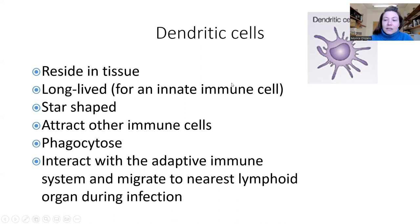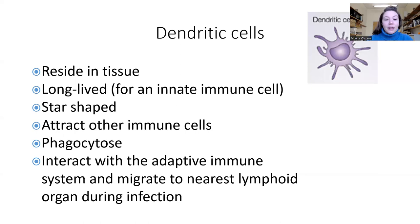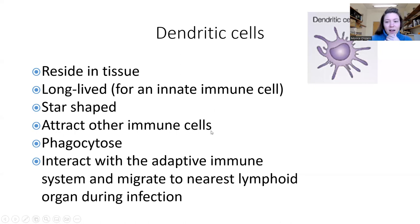Why would your body bother having both dendritic cells and macrophages? It's probably that we need a backup system, and they live in different locations. Macrophages have that pool of monocytes in the blood that they can pull from and traffic into tissue. Dendritic cells typically sit still in their tissue until they're needed. It's a combination of living in different parts of the body and it's always good in biology to have a backup system.